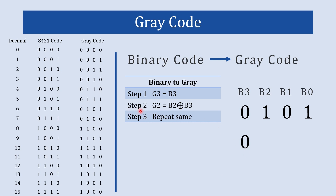Now we will go for step number 2: finding g2 of gray code. It is the XOR operation of b2 and b3. So it is b2 XOR b3, and the XOR operation of these two gives us g2.